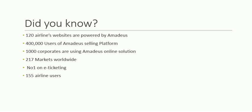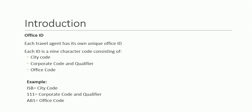Amadeus is a very large platform and the purpose is to understand the airline reservation system. When you use the Amadeus system, every Amadeus system will provide you an office ID. Each travel agent has its own unique office ID which consists of a city code, corporate code and qualifier, and office code. For example, ISB equals Islamabad as the city code, KRIPLE1 is the corporate code and qualifier, and NAB1 is the office code.